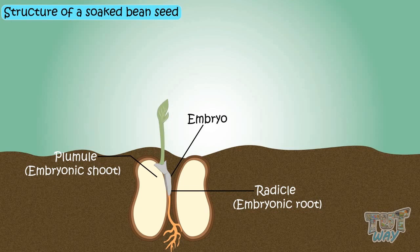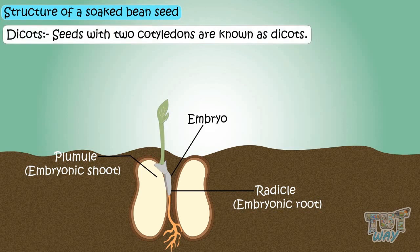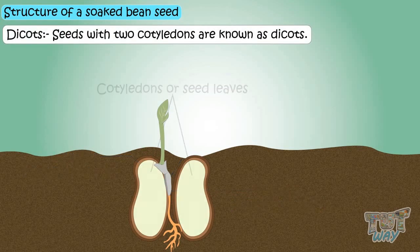Kids, we learned various parts of the bean seed, which is a dicot. That is, it has two cotyledons.